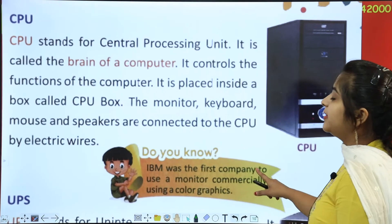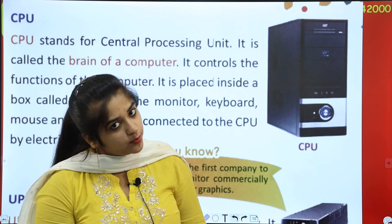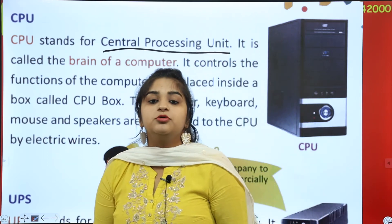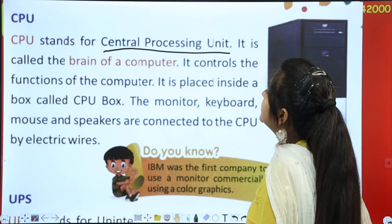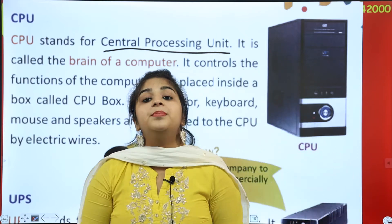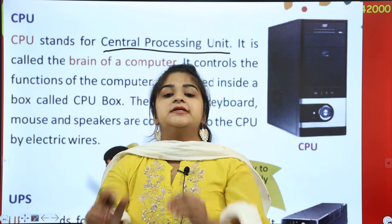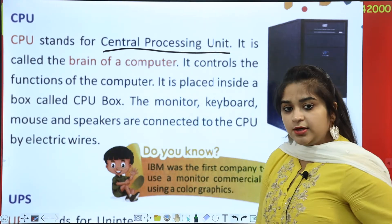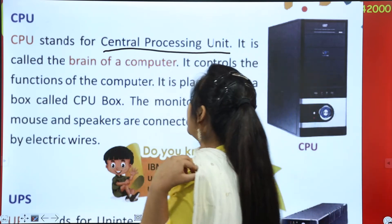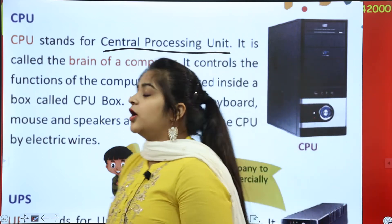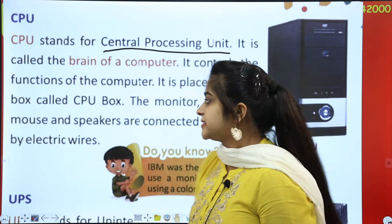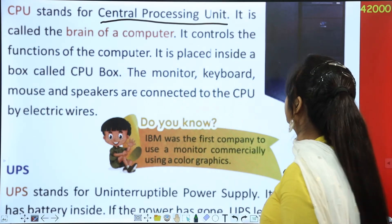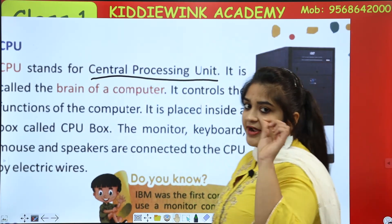Next is your CPU. This big box is called CPU, which stands for Central Processing Unit. It is called the brain of a computer. It controls all the functions of the computer and is placed inside a box called the CPU box. The monitor, keyboard, mouse, and speakers are all connected to the CPU by electric wires.